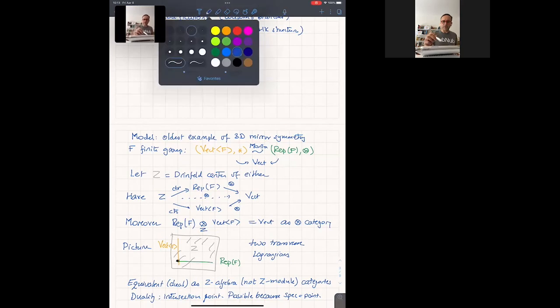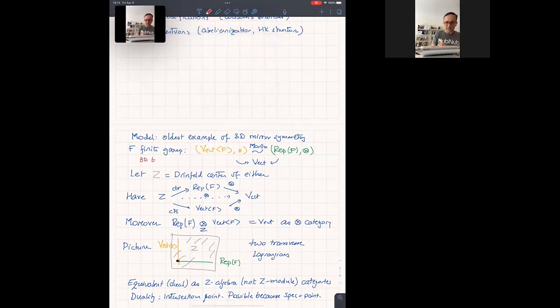By the way, the name for that, the more common name for that is electromagnetic duality. And what it says is that there are two tensor categories which are Morita equivalent constructed from F. One is vector bundles, F-graded vector spaces, or vector bundles on F for the convolution tensor product. And the other one is the category of representations, the tensor product. And these are Morita equivalent as tensor categories with a bimodule being, in both cases, the fiber functor vector.